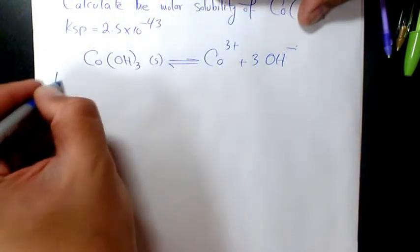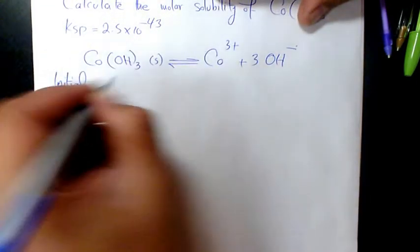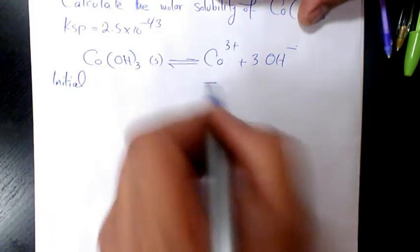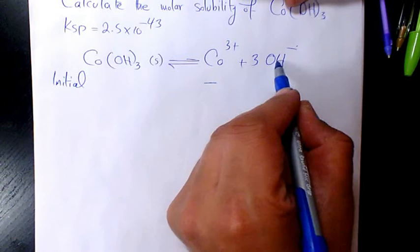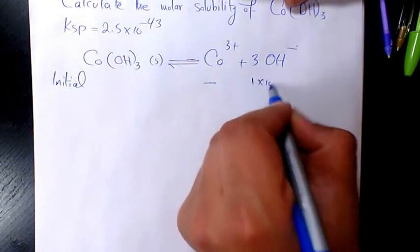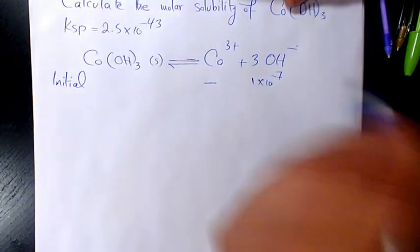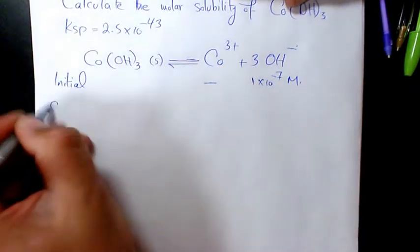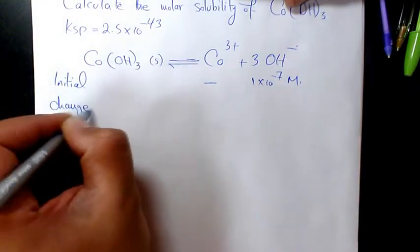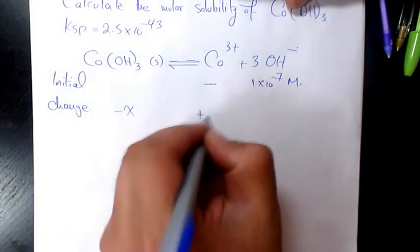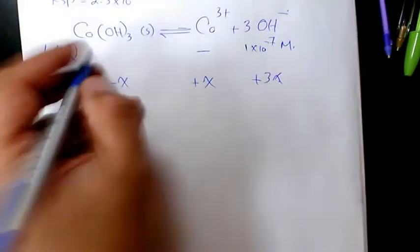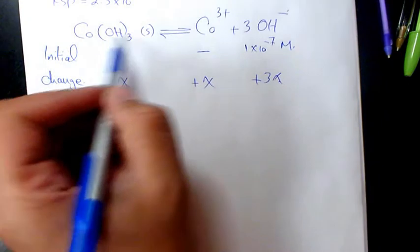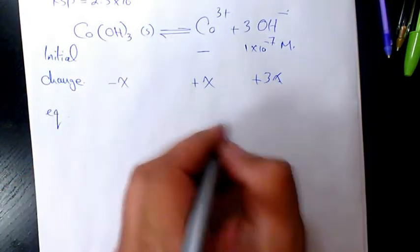So initially we don't write it for solid. Initially there is no cobalt ion, but since we have hydroxide we know it's 1×10⁻⁷ from water. Molar change will be -x, +x, +3x. Again we don't write the equilibrium and initial for solid. Equilibrium is going to be x, 1×10⁻⁷ + 3x.